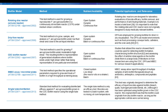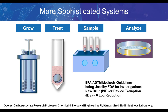The standard process based on these ASTM methods grows the biofilm in the CDC reactor, then moves coupons and exposes them to a treatment. After exposure to treatment, the biofilm is sampled — here the biofilm is removed by sonication in a water bath — and then the sonicate is analyzed. These methods are in line with EPA ASTM methods and are being used as guidelines by the FDA for investigation of new drug and device exemptions.